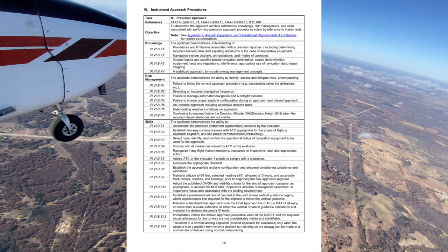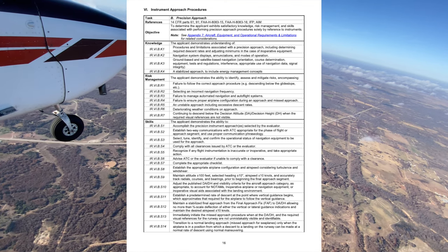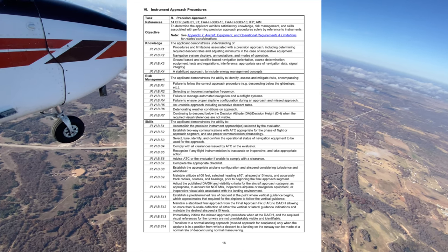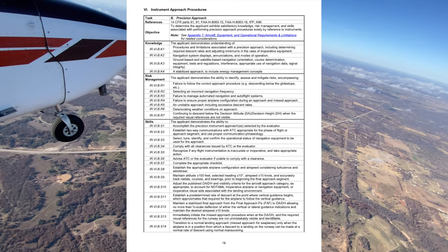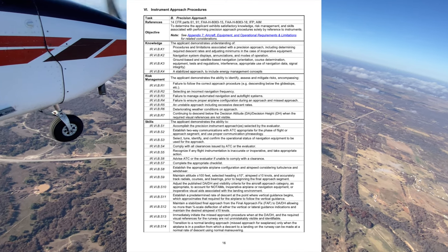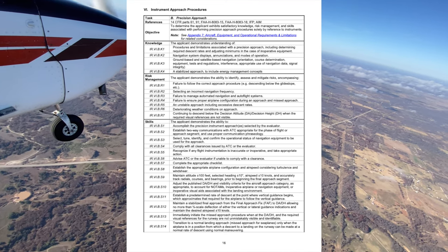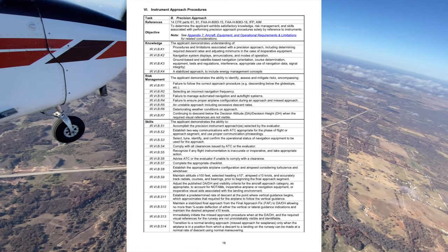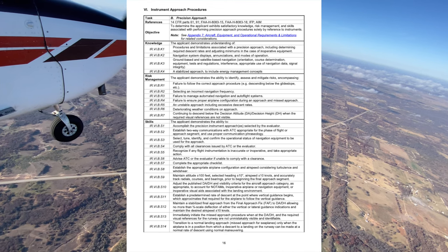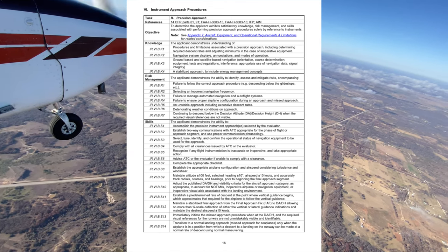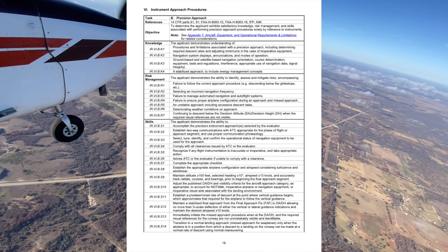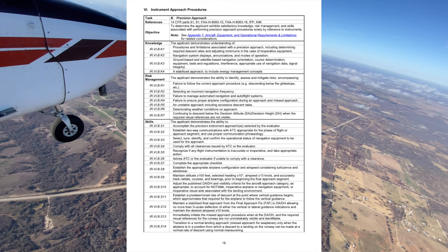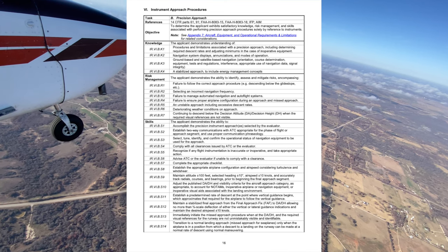The glide slope provides vertical guidance, making it a precision approach. If it fails, refer to the localizer-only approach. The localizer provides only lateral guidance and is located at the departure end of the runway. It is four times more sensitive than the VOR, with coverage generally 35 degrees to each side of centerline within 10 nautical miles, and 10 degrees of each side of centerline within 18 nautical miles. If the localizer fails, the approach is not authorized.